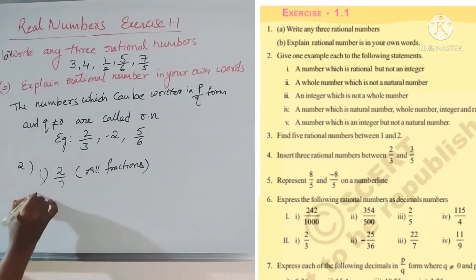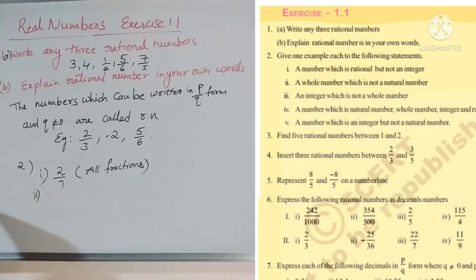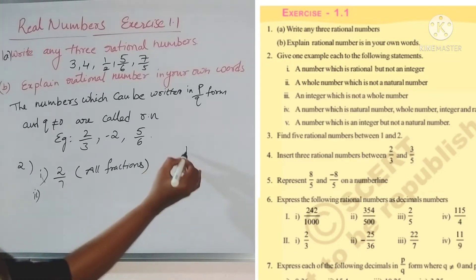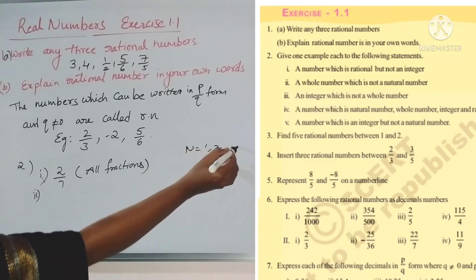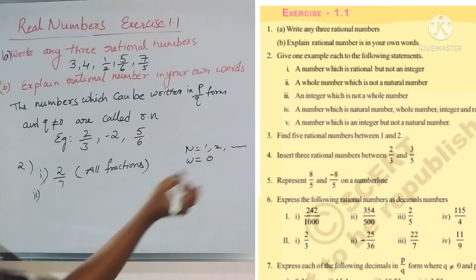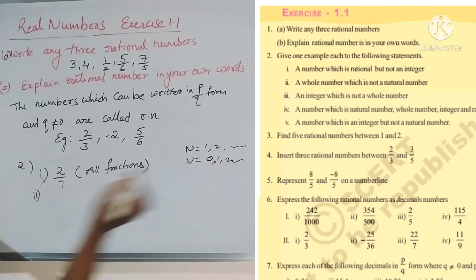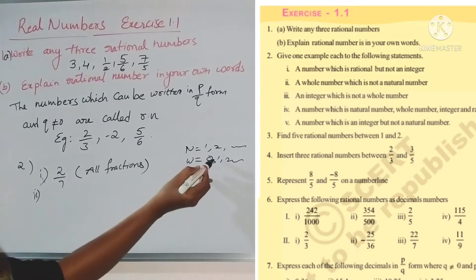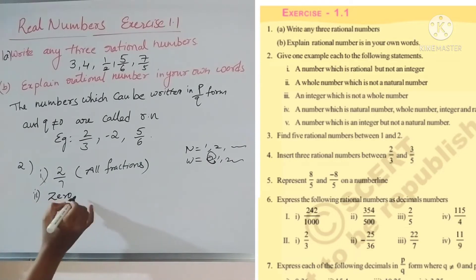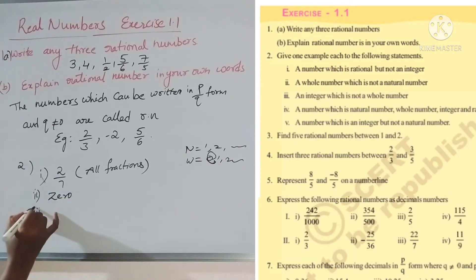Second statement: a whole number which is not a natural number. Natural numbers start from 1, 2, 3... Whole numbers start from 0, 1, 2, 3. So the answer here is zero. Third statement: an integer which is not a whole number — so we need a number that is an integer but not a whole number.